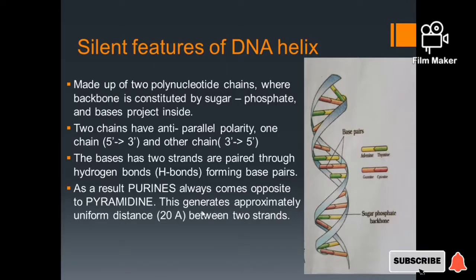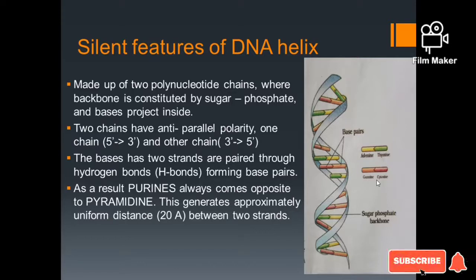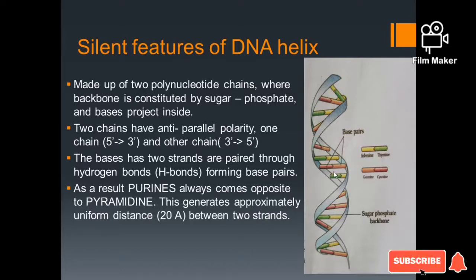Purines always come opposite to pyrimidines. This generates an approximately uniform distance of 20 angstroms between the two strands. The distance between the two strands is 20 angstroms.